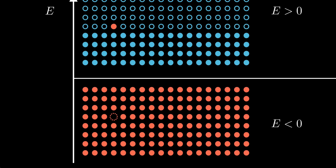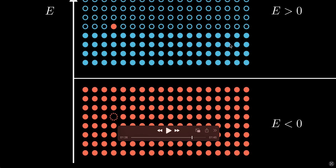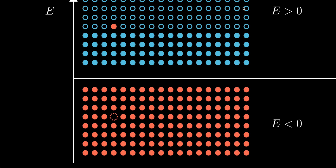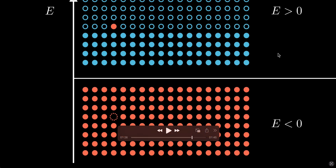Dirac didn't initially know what to make of this new particle. Electrons have negative charge, so this hole has positive charge. At first he guessed it might be the proton, but people knew the proton has a much higher mass than the electron, so that couldn't be right. Dirac then concluded it must be a completely new particle with opposite quantum numbers to the electron — what we now call an antiparticle. This was the first theoretical prediction of antimatter, a remarkable example of theoretical physics predicting completely unexplored phenomena.